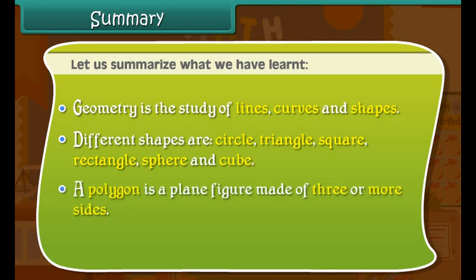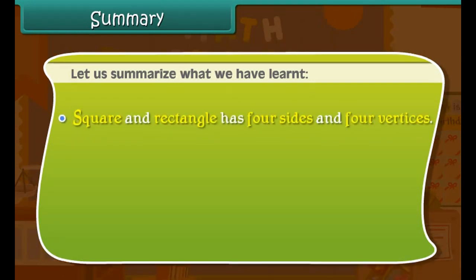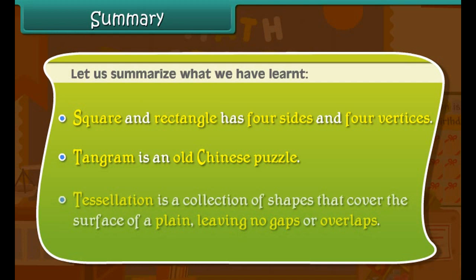Summary. Let us summarize what we have learned. Geometry is the study of lines, curves, and shapes. Different shapes are circle, triangle, square, rectangle, sphere, and cube. A polygon is a plane figure made of three or more sides. Triangle has three sides and three vertices. Square and rectangle have four sides and four vertices. Tangram is an old Chinese puzzle. Tessellation is a collection of shapes that cover the surface of a plane leaving no gaps or overlaps.